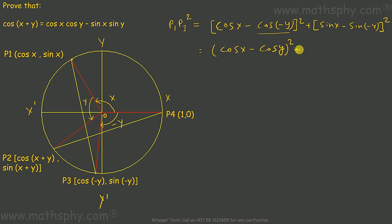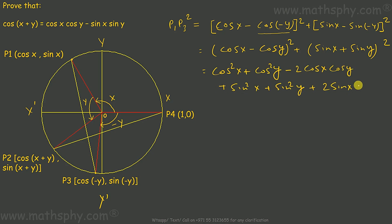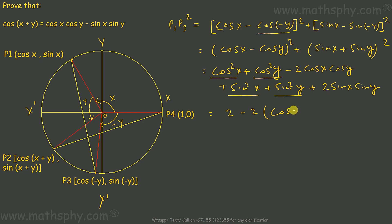Substituting, this becomes (cos x − cos y)² + (sin x − (−sin y))² = (cos x − cos y)² + (sin x + sin y)². Expanding and using the identities cos²x + sin²x = 1 and cos²y + sin²y = 1, we get 1 + 1 = 2, minus 2 cos x cos y, minus 2 sin x sin y. Taking 2 as common: P1P3² = 2 − 2(cos x cos y − sin x sin y).